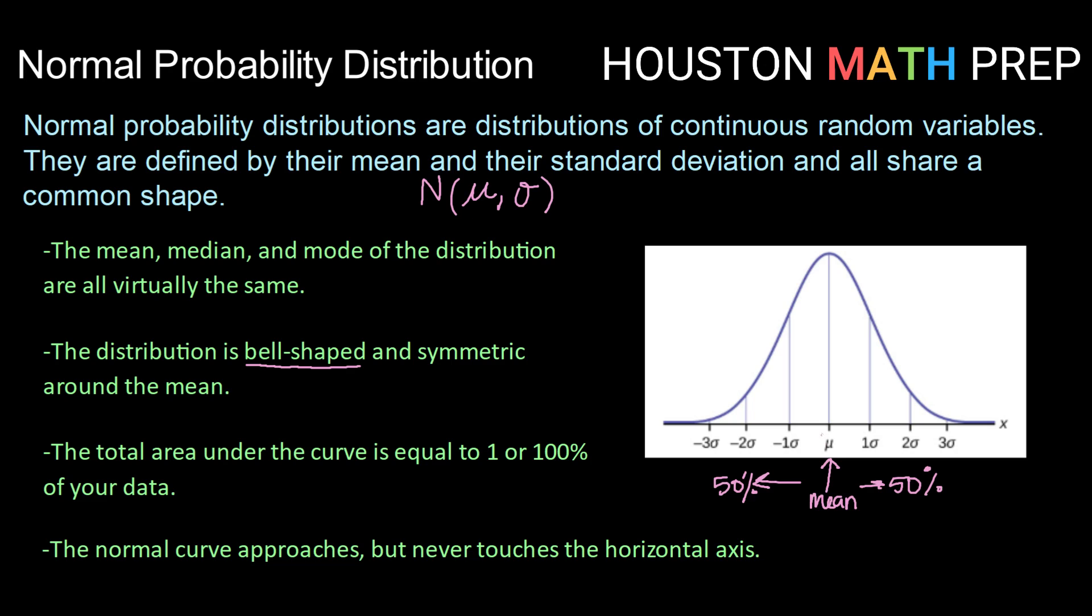It's also very important for us to know that the total area underneath one of these normal probability curves is 1. So the total area underneath here equals 1, or we could think 100% if we're thinking in percentages.